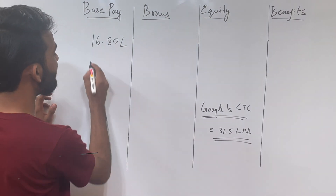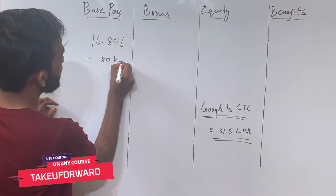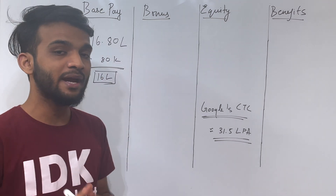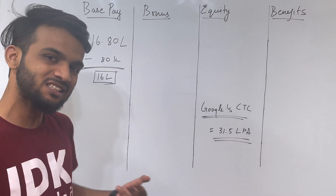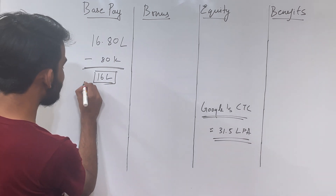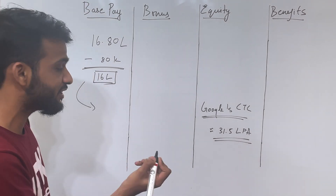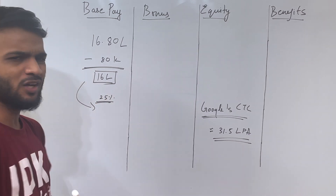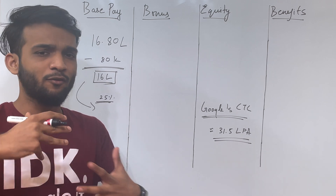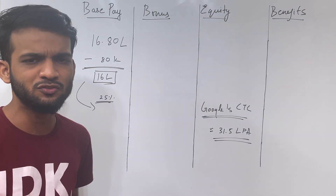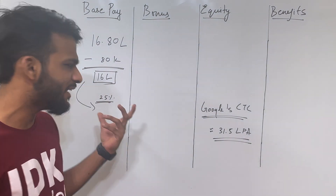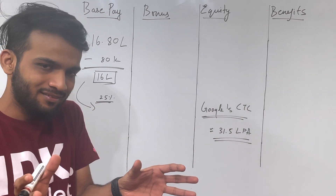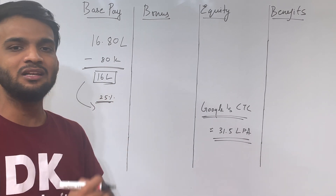You do not get this full amount directly. There is a PF deduction of 80K, so 16 lakh is the amount that you get. Then there is a tax deduction of around near about 25%, because if you consider tax slabs like 30%, 20%, and for the first 5 lakhs, you can approximate it to 25%. If you have done some investments and tax saving, then this 25% might slightly come down.